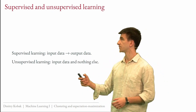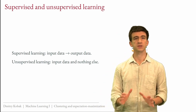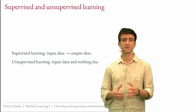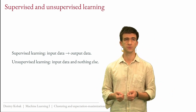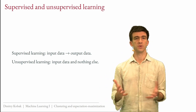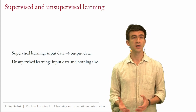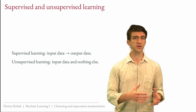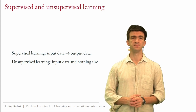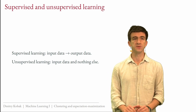In unsupervised learning, which is our topic from now on, we just have input data. We do not have output data, we don't have labels, we don't have any values to predict. We just have a dataset and we want to do something with it — find some structure in it usually. Unsupervised learning is often connected to data mining and similar things.